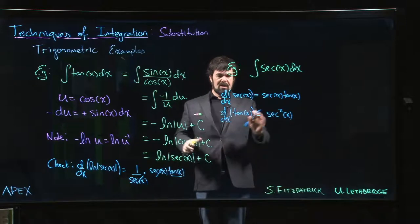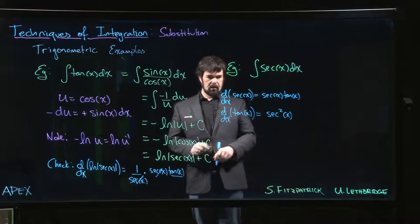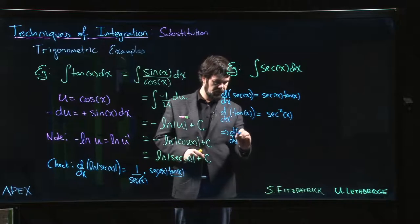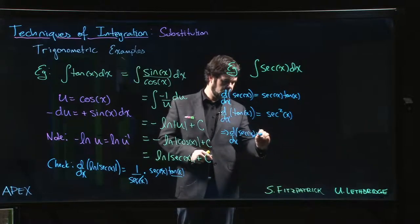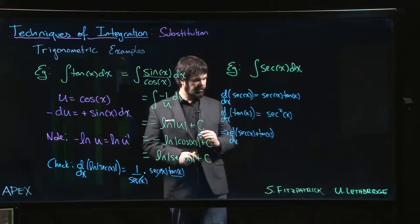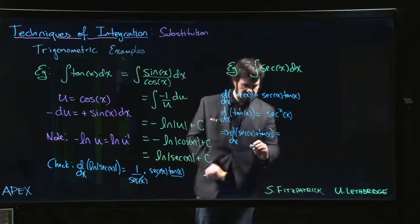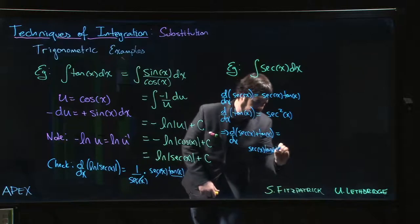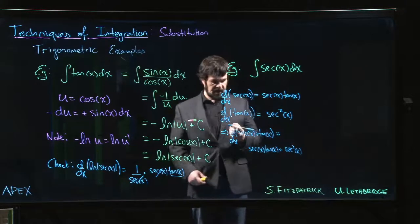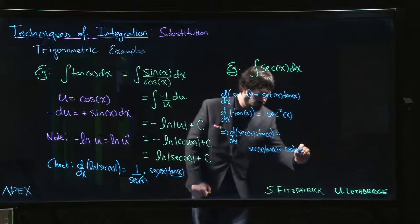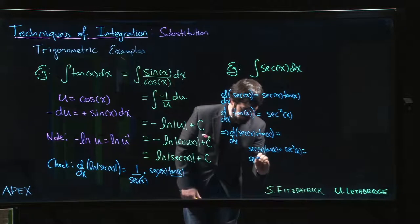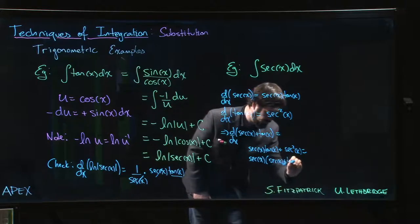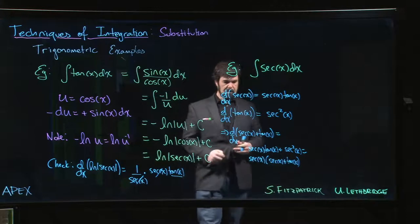So the trick is realizing that you can add these two together. So what you can do is say, well, the derivative of secant x plus tan x, we just have to add these. So it's secant x tan x plus secant squared x. And we can factor out secant.